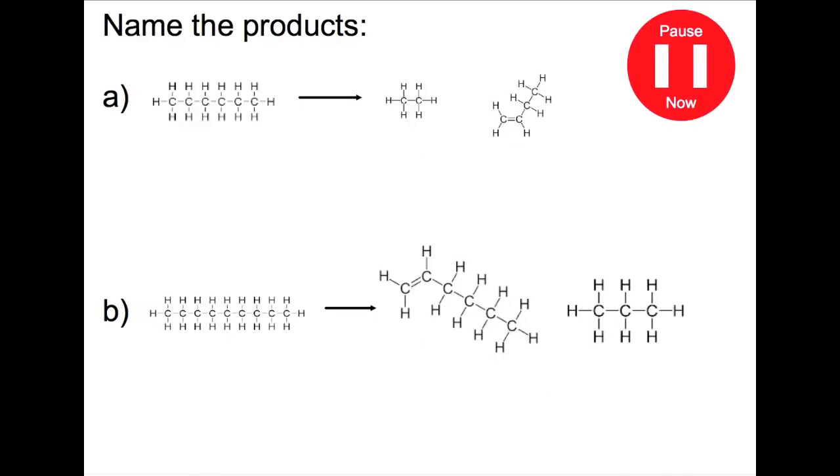In this final example, pause the video and name the two products that are produced. So here we have two carbons and we have six hydrogens. This is our alkane, so this is ethane.